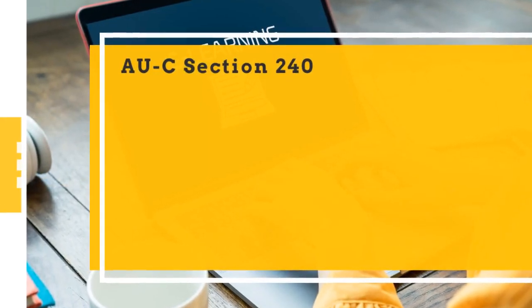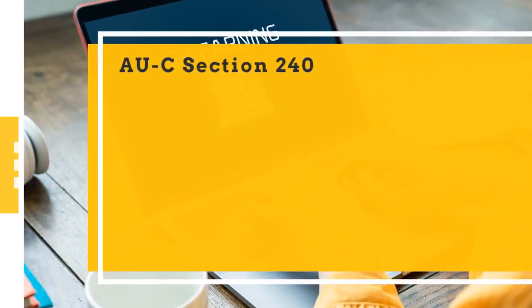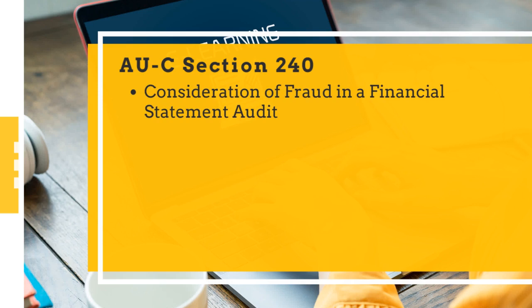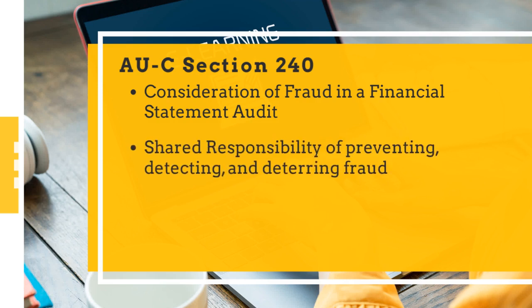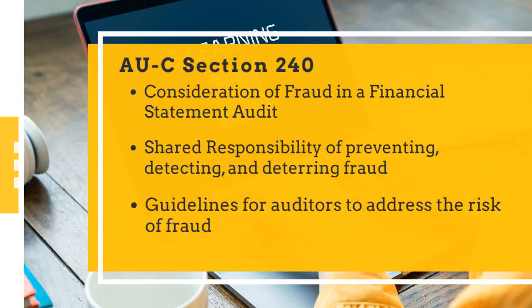The American Institute of Certified Public Accountants, AICPA, has implemented guidelines for auditors to address the risk of fraud through its audit standard on fraud, as outlined in AUC Section 240. This standard places a significant emphasis on the shared responsibilities of those charged with governance and management in preventing, detecting, and deterring fraud.